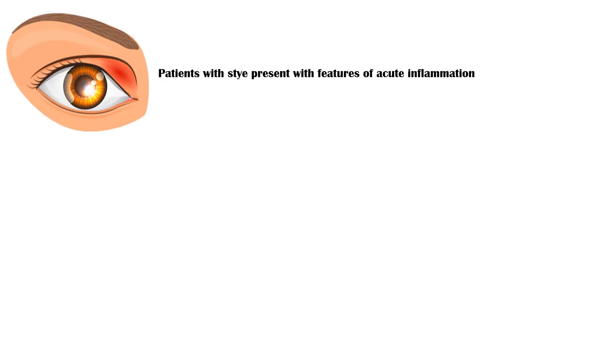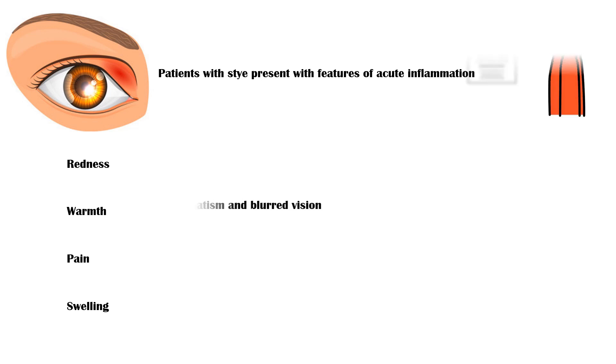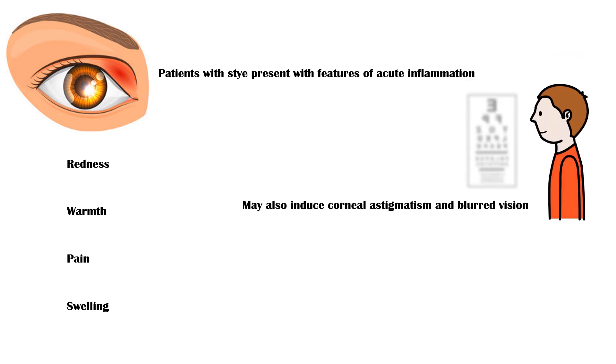Since a stye represents a focal abscess, patients will present with features of acute inflammation, including redness, warmth, pain, and swelling of the affected area. As the lump is located on the eyelid, it may also induce corneal astigmatism and cause blurring of vision.